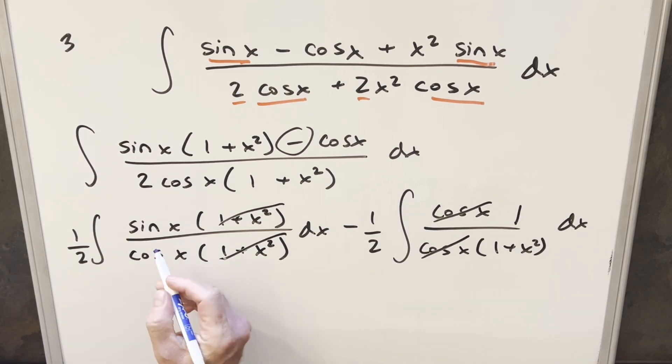This one we can do with arctan. This right here is sine over cosine. This is the same thing as tan of x. So we can do this one with a formula. So going ahead and integrating.